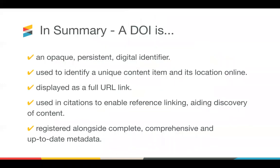To summarize: a DOI is an opaque, persistent digital identifier. It is used to identify a unique content item and its location online, and this should be updated if and when the content moves. It should always be displayed as a full URL link, used in citations to enable reference linking and aid discovery of content, and it should be registered alongside complete, comprehensive, and up-to-date metadata.